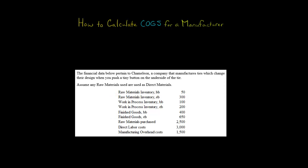For each one, we have the beginning balance, abbreviated as BB, and the ending balance of the account, abbreviated as EB. We also have some information about how much raw materials we purchased during the period, the direct labor costs we incurred, and manufacturing overhead.